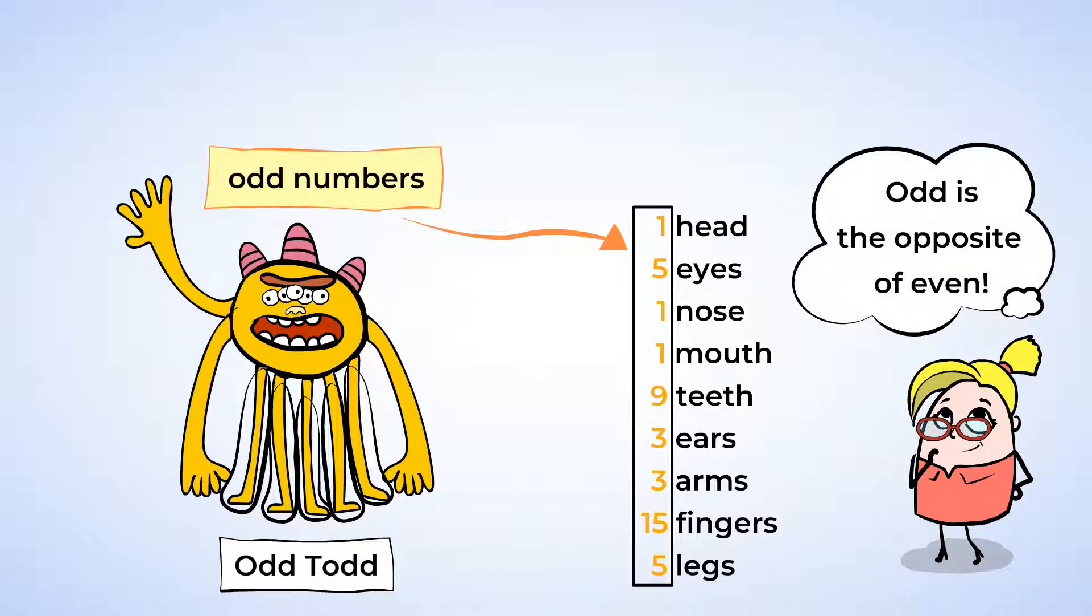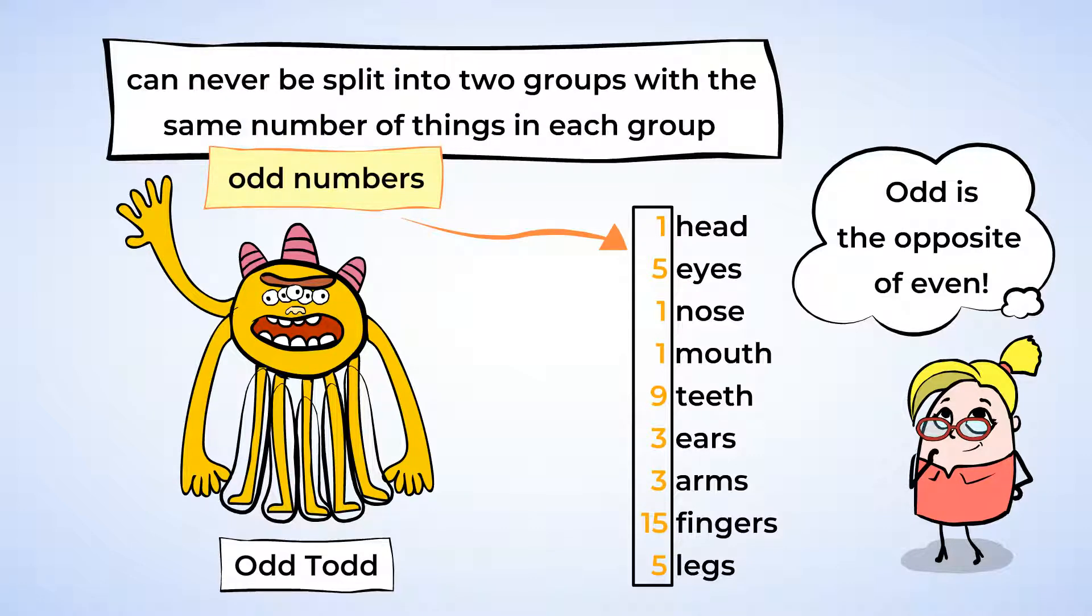An odd number is the opposite of an even number. An odd number can never be split into two groups with the same number of things in each group. There will always be a group with one more or one less than the other group.